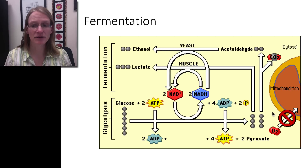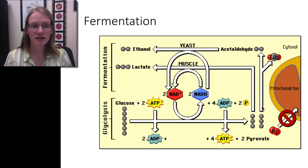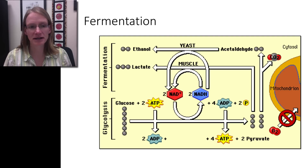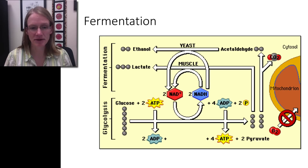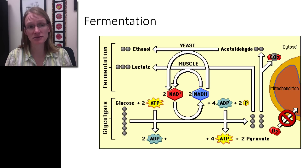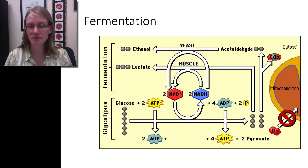If oxygen is present, that pyruvate goes into the mitochondria and completes cellular respiration. But if oxygen isn't there, we can go through fermentation and recycle NAD+ so that we can create more ATP. As a byproduct we produce ethanol or lactate, but the whole goal is just to recycle that NAD+. This keeps some organisms going until they can get oxygen, or sustains smaller short-lived organisms entirely.